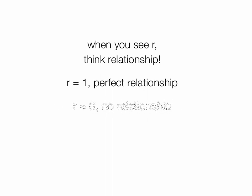So when you see R, think relationship. R is equal to 1, it's a perfect relationship. If R is equal to 0, there's no relationship at all. And if R is equal to negative 1, there's a negative relationship. R moves from negative 1 to 1. That's the range of R.